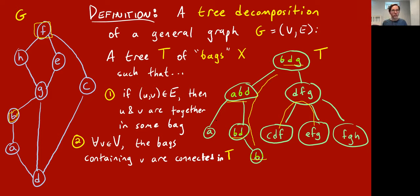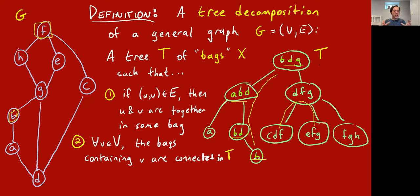That's the whole definition. It's a little complicated — it's hard to verify that T satisfies all the conditions: each edge is in a bag, and for every vertex the subtree of bags containing it is connected. It's also not immediately intuitive how you'd come up with such a T given a graph G, and T is not unique — there are multiple tree decompositions possible for a given graph G.